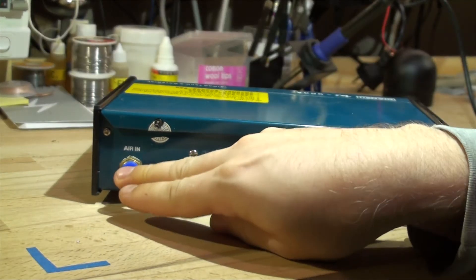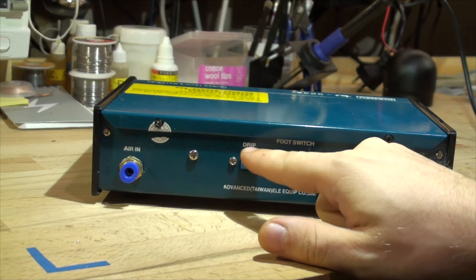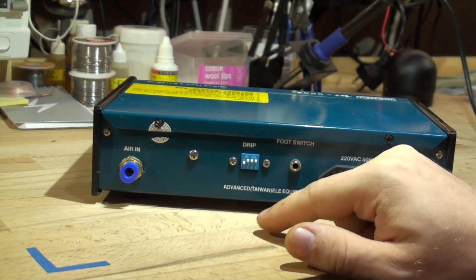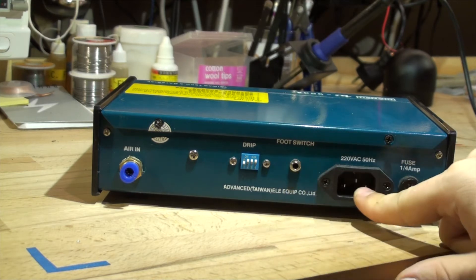We've got the air in. This is the main compressor input. Drip. I don't know why they called it drip. It's a DIP switch. A foot switch or a handheld switch and the mains in.